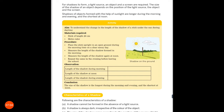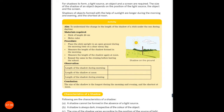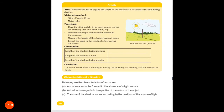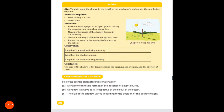The size of the shadow of an object depends on the position of the light source, the object and the screen. Shadows of objects formed with the help of sunlight are longer during the morning and evening, and shortest at noon. The length of the shadow changes depending on the time of day.